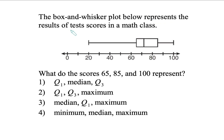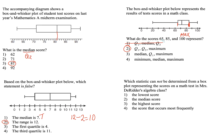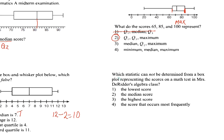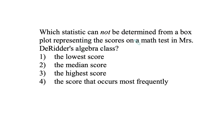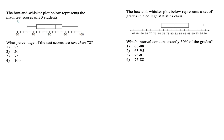The box and whisker plot below represents the results of test scores in a math class. They want to know what 65, 85, and 100 represent. The 100 is your maximum value, so we can eliminate the first choice. The 85 is your Q3, and the 65 is your Q1. We can find the lowest score, the median score, and the highest score from a box plot. However, you cannot find the score that occurs the most — we know that means the mode.